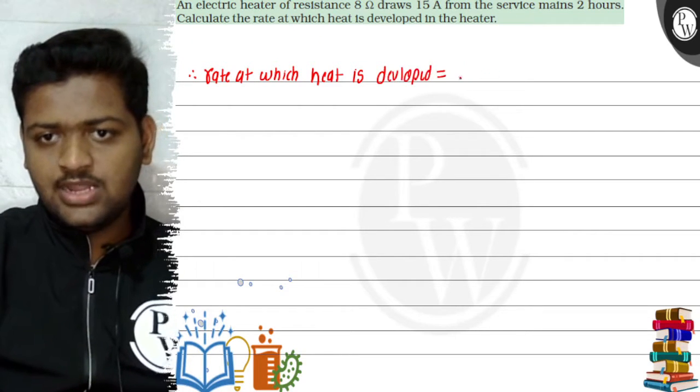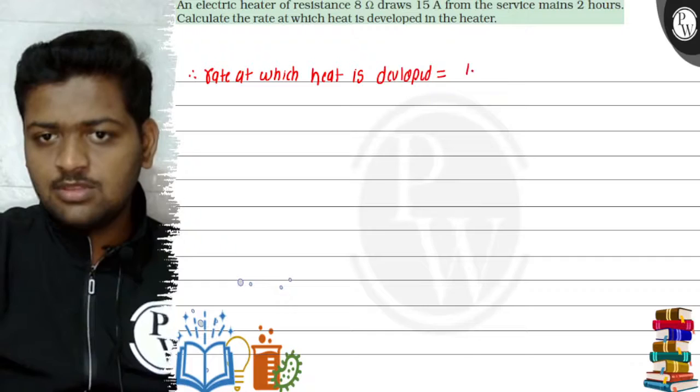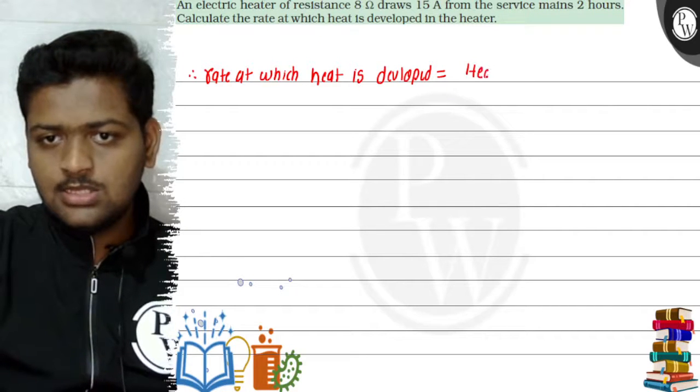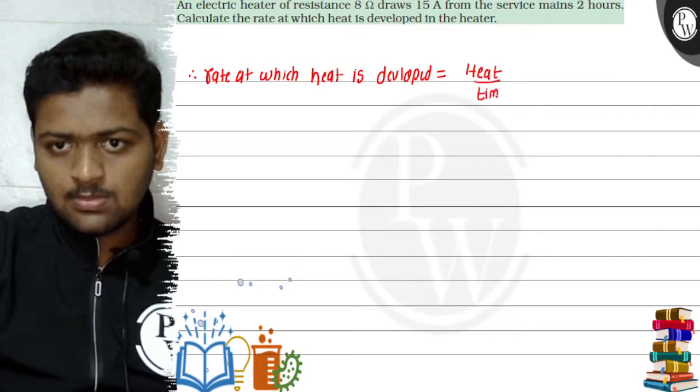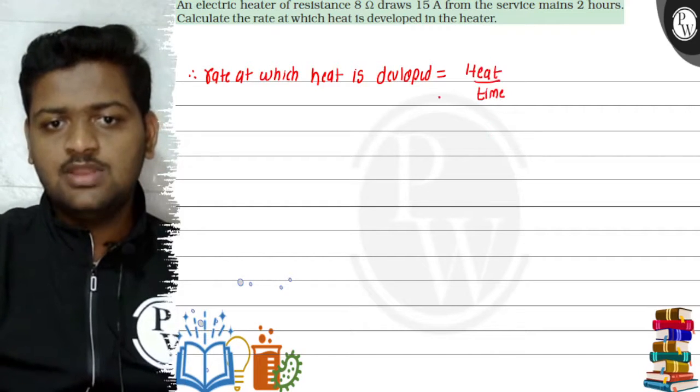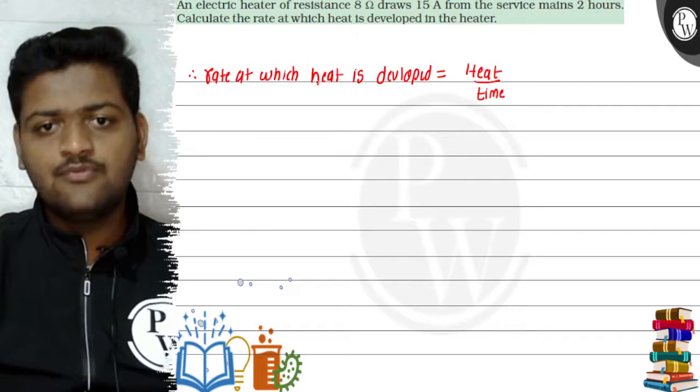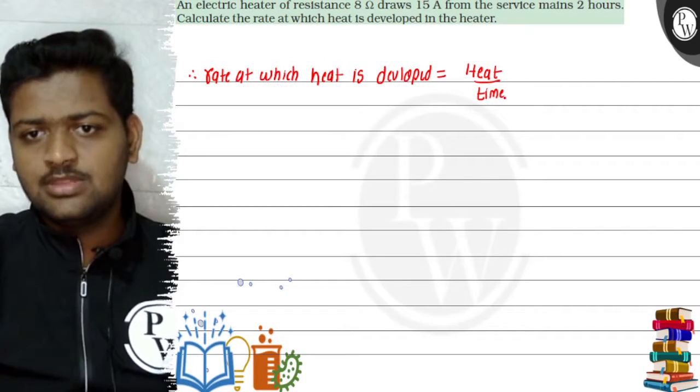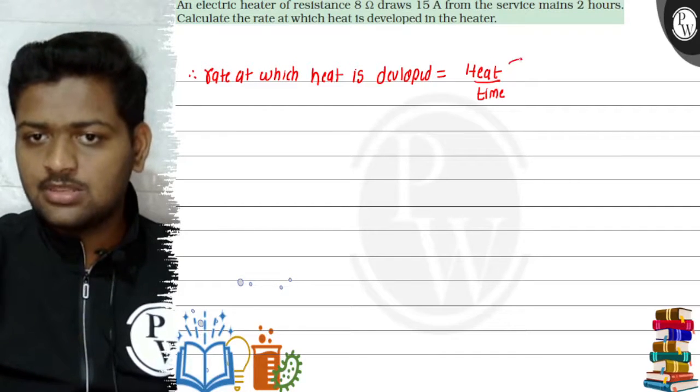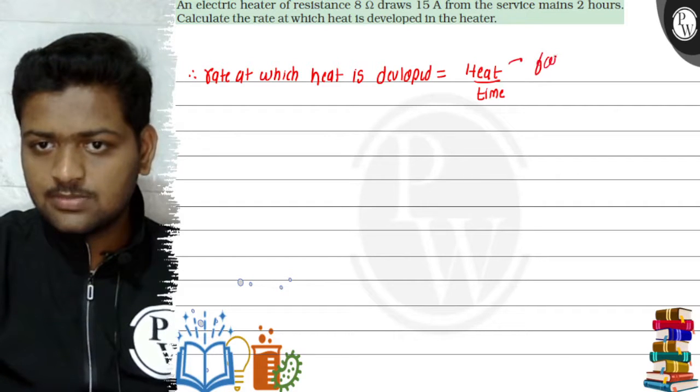Okay, so rate at which heat is developed, the meaning of this particular line is heat upon time. Okay, whenever the word rate comes before any quantity, then it is divided by time. That means it should be divided by time.